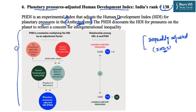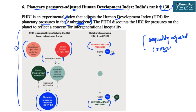The range of PHDI lies between zero and one. If PHDI equals zero, planetary pressures are highest. If it is one, it equals the HDI, meaning there are low planetary pressures. So the more the PHDI, the lower the planetary pressure — there is an inverse relationship.